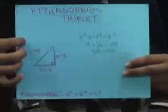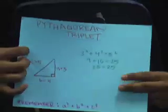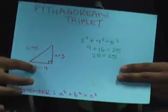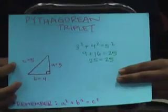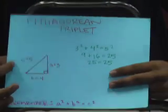This example is called the Pythagorean triplet. c equals 5, b equals 4, and a equals 3. So what you would do is write 3 squared plus 4 squared equals 5 squared. Then you get 9 plus 16 equals 25. So the result is 25 equals 25.